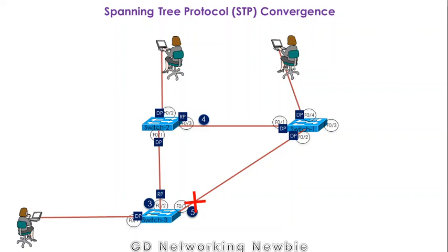The reason for these two intermediate states — listening and learning — before moving from blocking to forwarding, is to avoid loops. Once this process is complete, a new spanning tree is established by the same switches, but with updated port roles. Some ports now have different designated and root port assignments, and the network is again in a stable state.